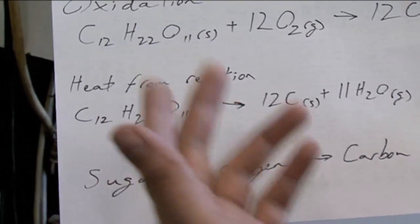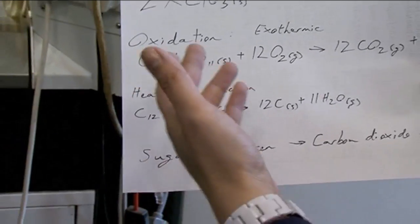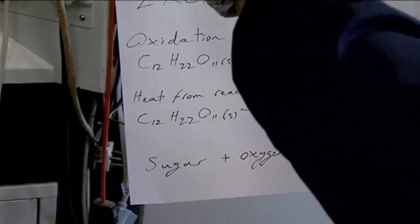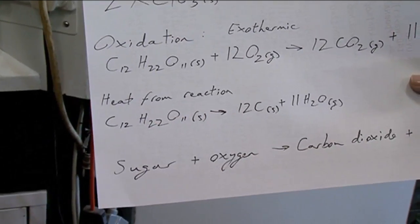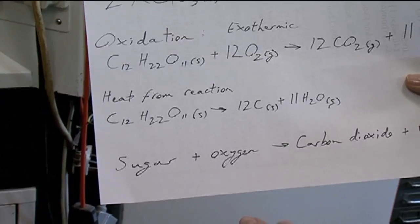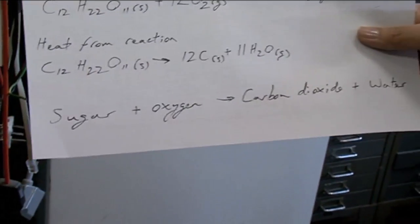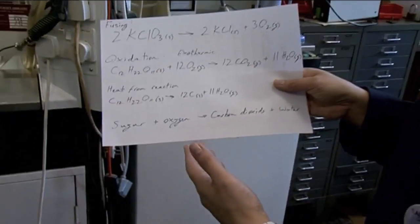And then the heat from the reaction itself actually creates carbon in the form of the soot. And you can see there in the tube, a lot of carbons form there and that's the black of the carbon soot. And you also get a lot of water vapour coming off that. In essence, therefore, what you've got there is sugar plus oxygen, giving you carbon dioxide and water.